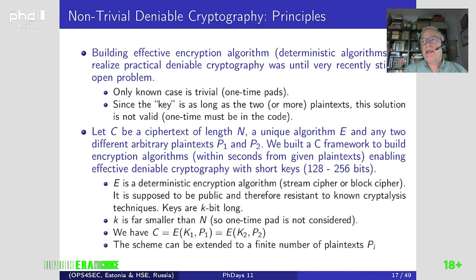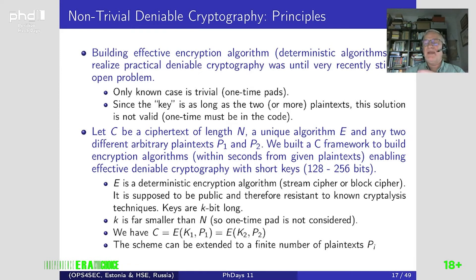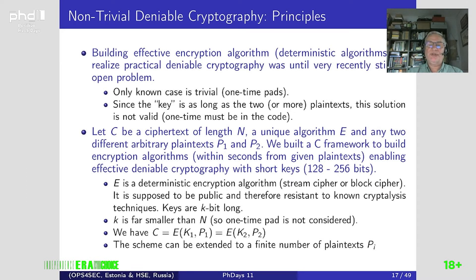The only known case is trivial, using one-time pads — you use random sequences as long as the two different plaintexts and XOR them bitwise. This is not practical since you have to embed the random sequences into the malware code, and they will be recovered during the reverse engineering step. We managed to solve this problem by using a deterministic algorithm with short keys.